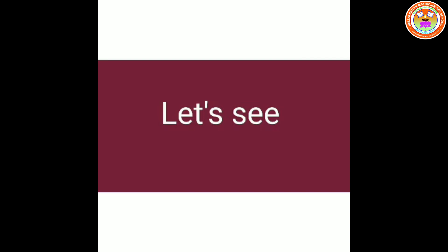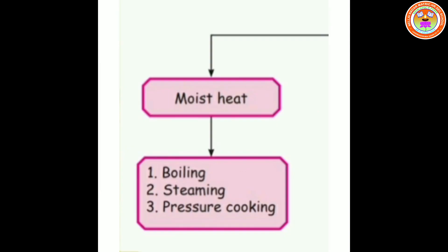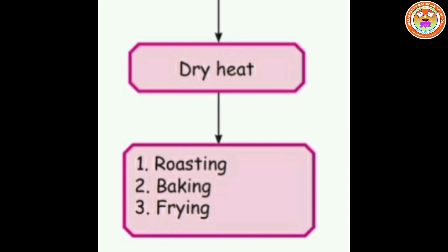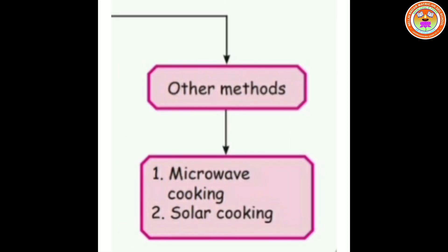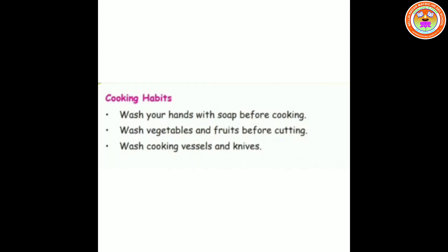Now let's see a flowchart of cooking methods. Cooking methods are categorized by moist heat, dry heat, and other methods. Moist heat includes boiling, steaming, and pressure cooking. Dry heat includes roasting, baking, and frying. Other methods include microwave cooking and solar cooking.